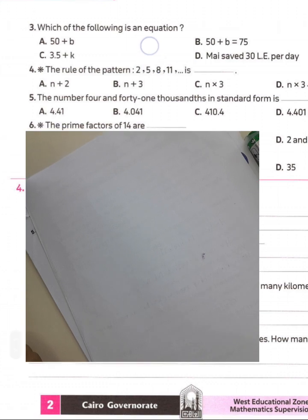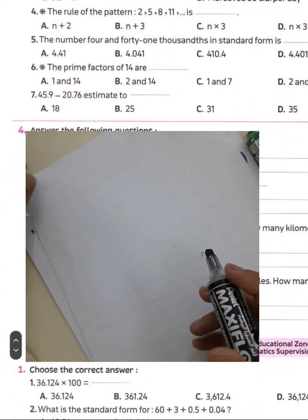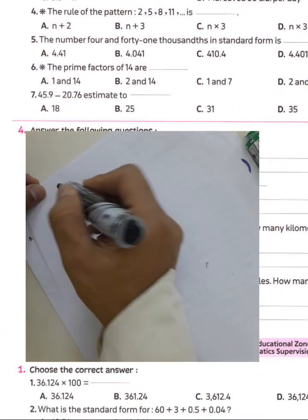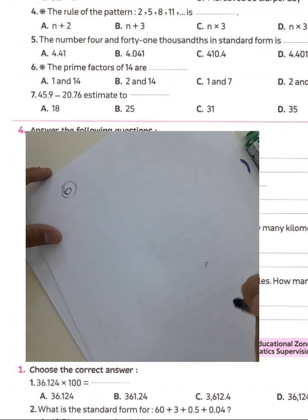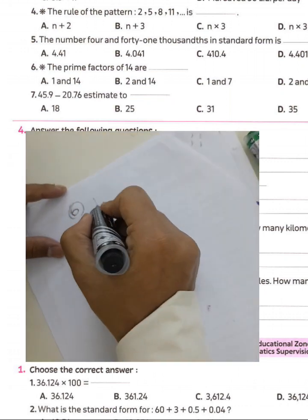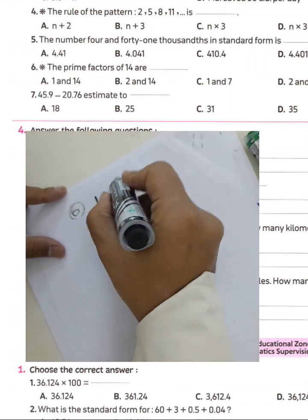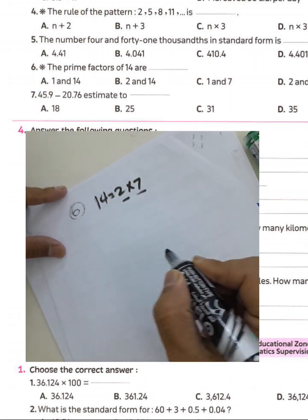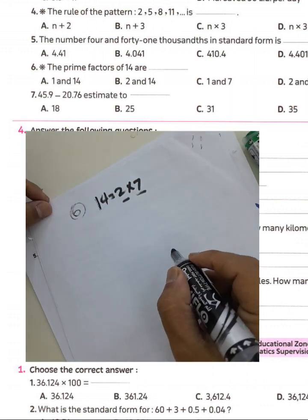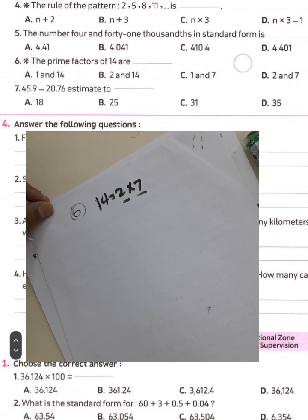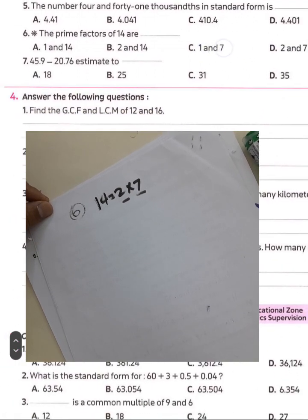Question six: what are the prime factors of 14? We know 14 equals 2 times 7, so the prime factors are 2 and 7. Choose letter D.